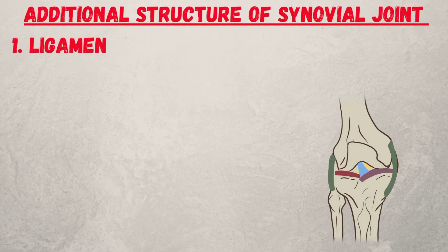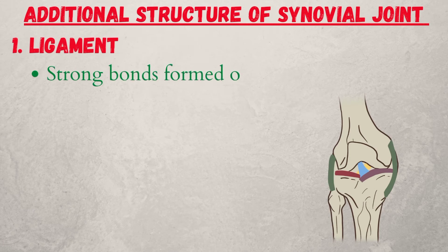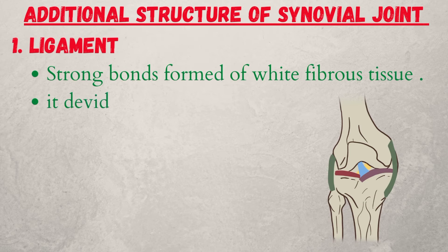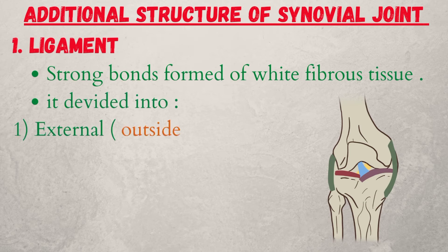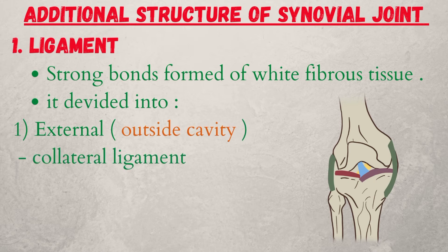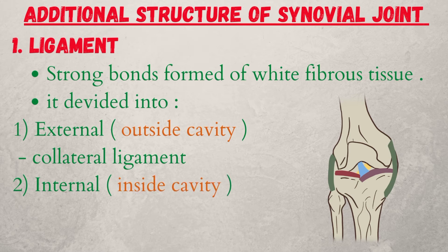Additional structures of the synovial joint: one, ligaments — strong bonds formed of white fibrous tissue, divided into external ligaments, which are outside the cavity (example: collateral ligament), and internal ligaments, which are inside the cavity (example: cruciate ligament). Their function is fixation.